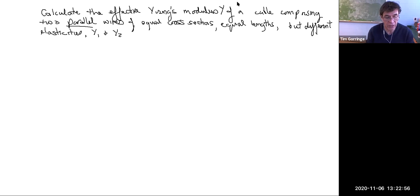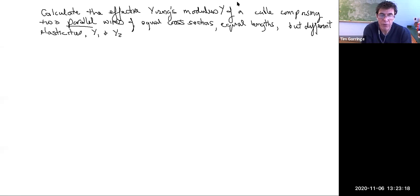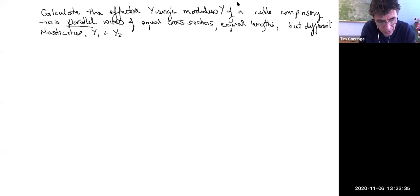We're imagining a situation where we have two wires of equal length and equal cross-sectional area. They're of different materials, and we arrange them in parallel, adjacent to one another. We're going to compute the effective Young's modulus — the effective elasticity of the cable arrangement — in terms of the individual Young's moduli of the wires that make up the cable.